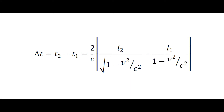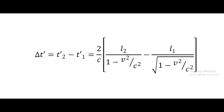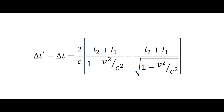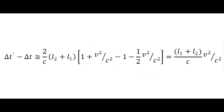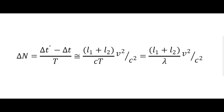The difference in transit time is delta T equals T2 minus T1. If the instrument is rotated through 90 degrees, delta T prime is given by another equation. The rotation changes the difference as shown. Using binomial expansion and ignoring terms higher than second order, we find the result. So the rotation should cause a shift in the fringe pattern due to the change of phase. Let delta N represent the number of fringes moving past the crosshairs as the pattern shifts. If light of wavelength lambda is used and the period of one vibration is T, then we get delta N from this equation.